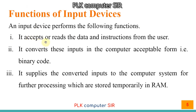Number one, it accepts or reads data and instructions from the user. Number two, it converts these inputs into a computer-acceptable form, that is binary code — zeros and ones. Number three, it supplies the converted input to the computer system for further processing, which is stored temporarily in RAM. RAM is known as volatile memory, so currently used data is saved in RAM.